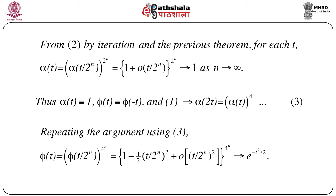Since φ(t) is the characteristic function of both X and Y, we can immediately conclude that the distribution of X as well as Y is the standard normal N(0,1).